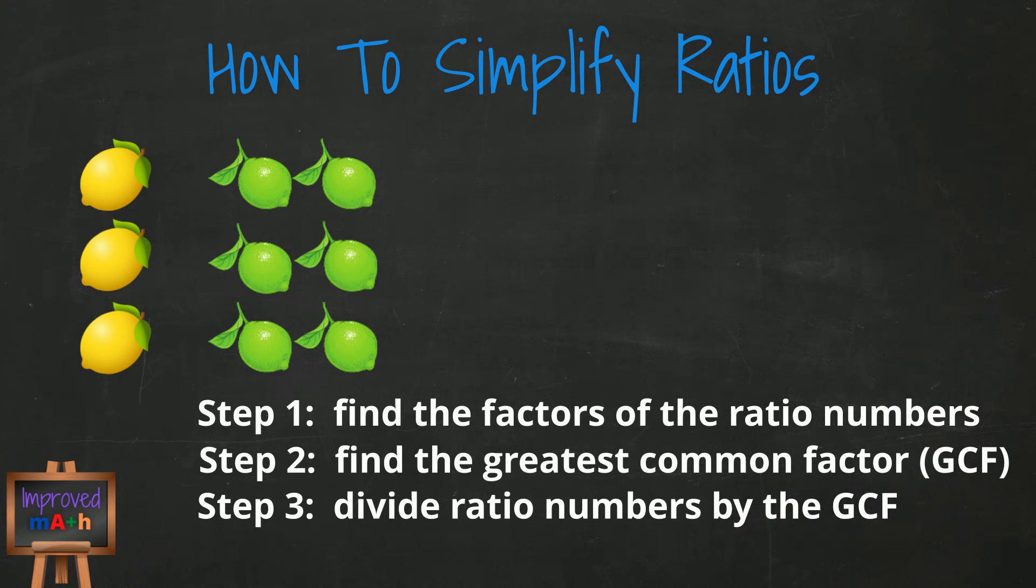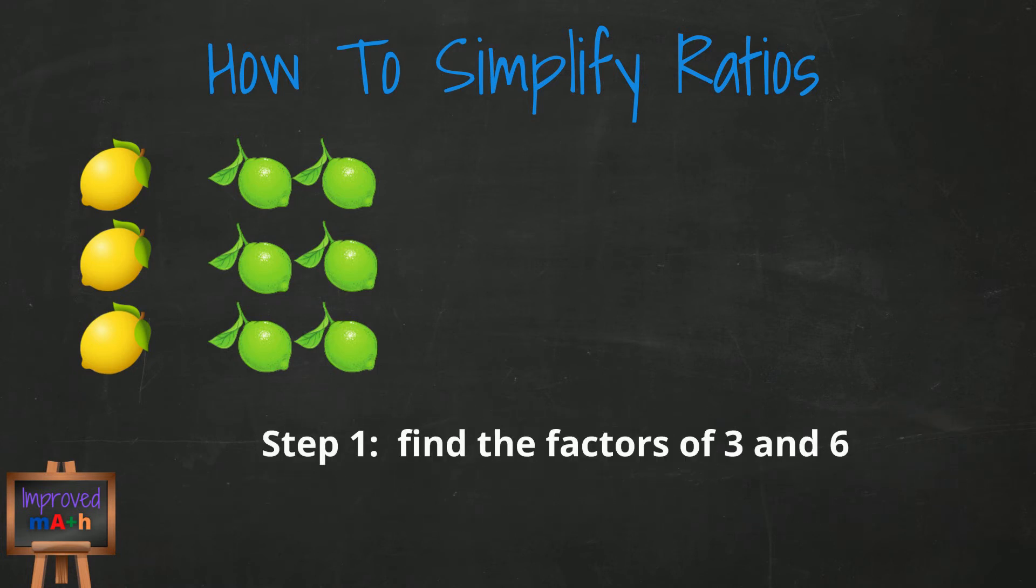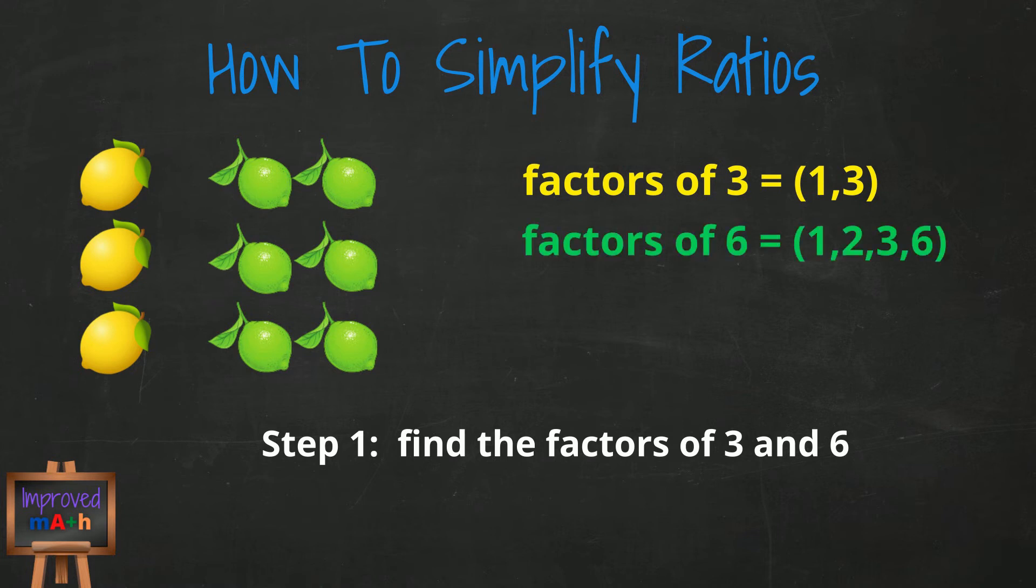Let's get back to our example with lemons and limes. Step 1: Find the factors of the numbers in our ratio. We need to find the factors of 3 and 6. The factors of 3 are 1 and 3. The factors of 6 are 1, 2, 3, and 6.